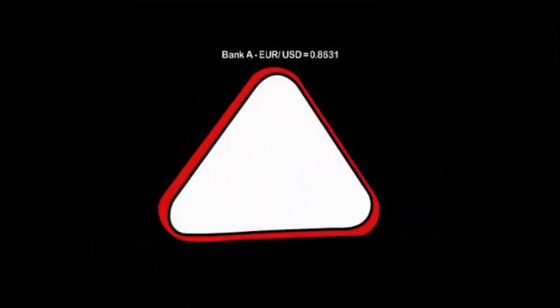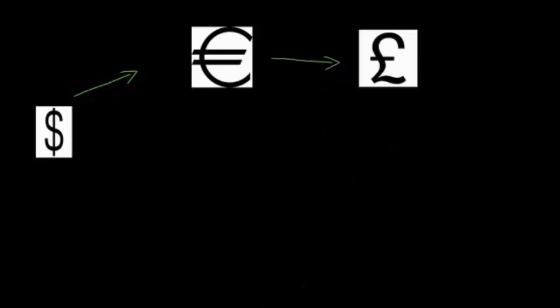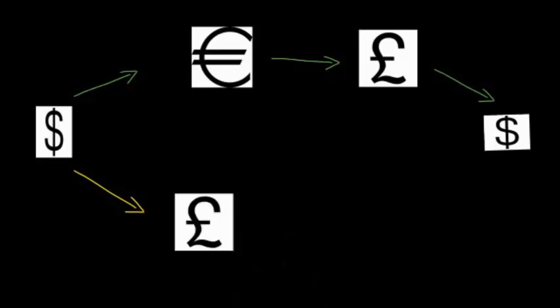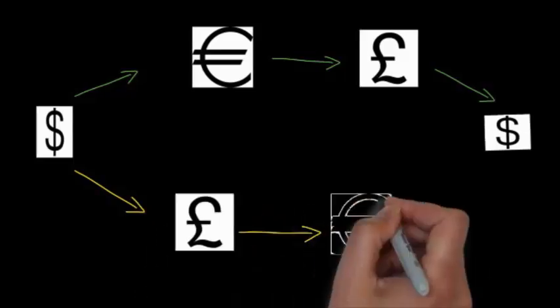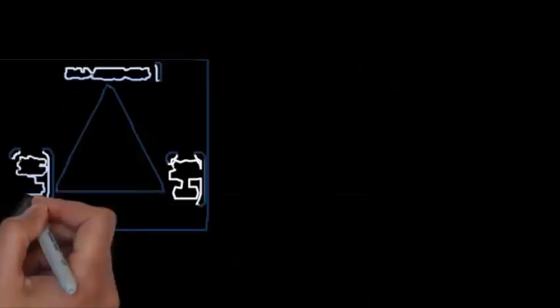We have 3 banks. Bank A has quoted the rate in Euro and Dollar terms. Bank B is in Dollar and Pound, and Bank C has quoted the rate in terms of Euro and Pound. So we have 2 paths: Dollar to Euro to Pound and then back to Dollar, or Dollar to Pound to Euro and then finally back to Dollar — checking whether we make a profit or loss in each path.